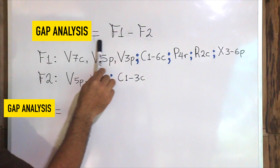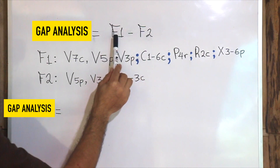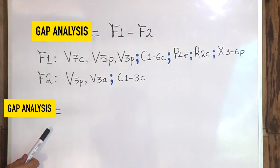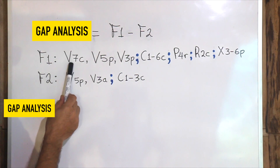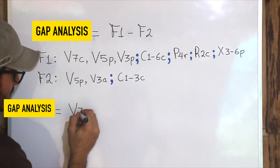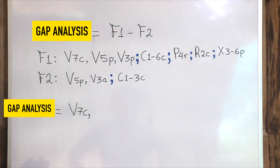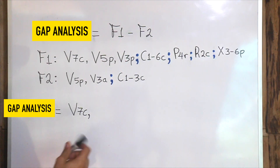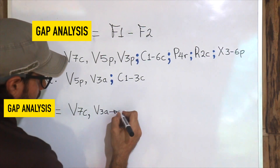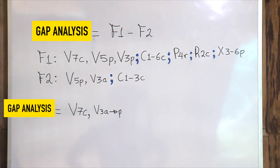The third step is to do a gap or differential analysis, to compare the formula for the mature forest F1 with the formula for the analog forestry plot F2. This helps us see what is missing in the plot to be intervened. The categories present in F1 but not in F2 pass directly to the gap formula, for example V7C. If the formula is equally present in both, it is not included in the gap, for example V5P. If there is a canopy layer of the same type in both, we use an arrow to indicate the difference in coverage, say V3A → P. We continue with other vegetation levels including herbaceous plants, vines, palms, and epiphytes, separating them with a semicolon.